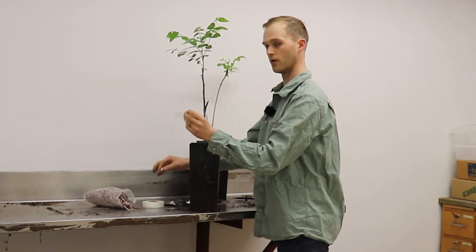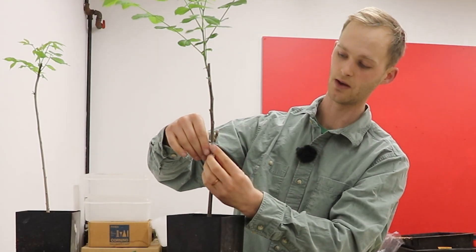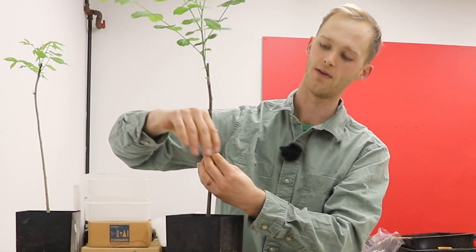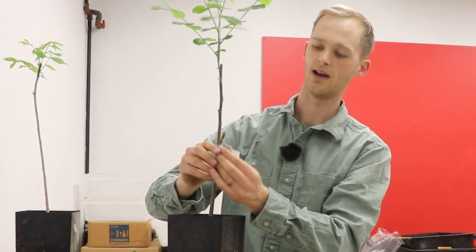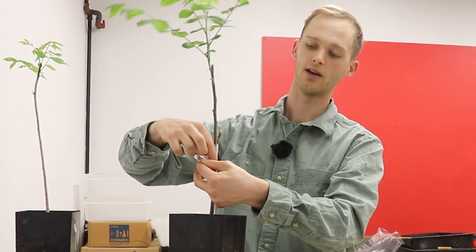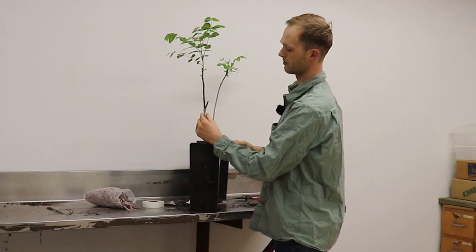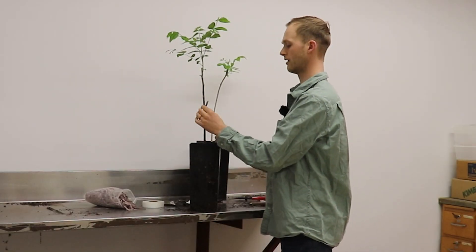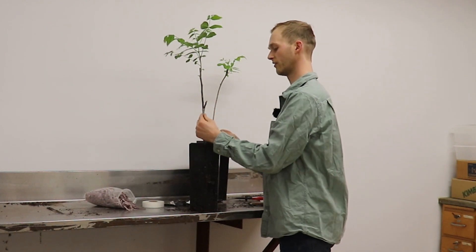Finally, we take the parafilm, and we cover our work to protect it. This parafilm retains, makes sure that there's adequate moisture within the graft union, making a good environment for the scion to grow into the rootstock.